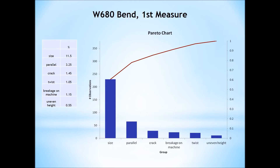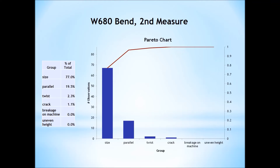Let's take a look at the current defect rate. Here's the Pareto chart. You can see a dimension identified as measure one — about 60% of all defects are coming from there. And then measure two brings it to nearly 80% of all defects. Parallel is also a measure and may be part of the problem with that dimension. But the dimensional size is clearly the biggest part of the problem.